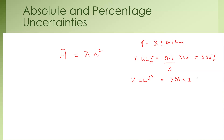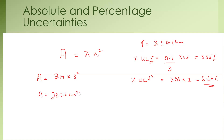The total percentage uncertainty in R² equals 6.66%. And the area is πR², so it will be 3.14 multiplied by the radius squared: 3.14 multiplied by 9. The final answer for the cross-sectional area is 28.26 centimeters squared.